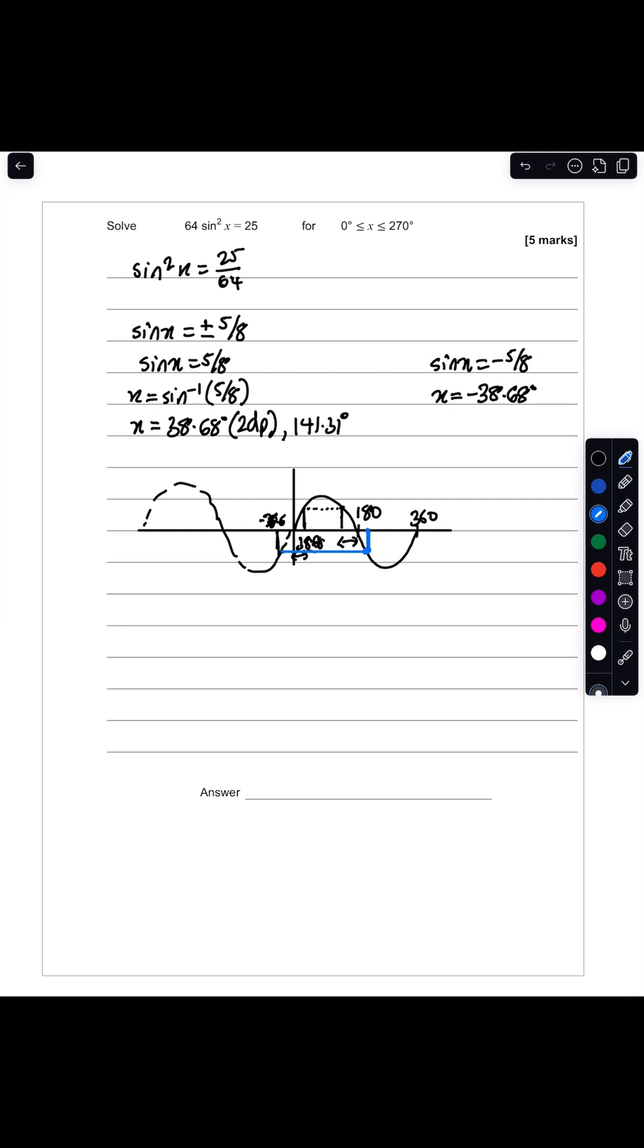So we can add that value onto 180 degrees. If we extend it, you can also see we get another value here. But remember, 270 degrees lies halfway between 180 and 360, so this value here unfortunately will be outside our range. So we can add 38.68 degrees to 180 degrees, and when you do that, that gives you a value of 218.7 degrees.